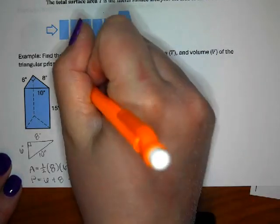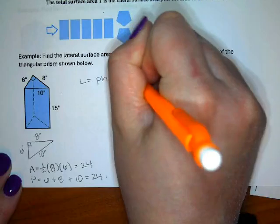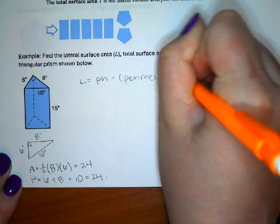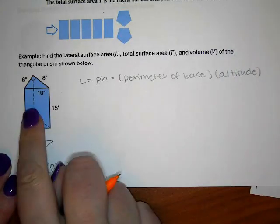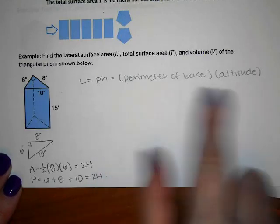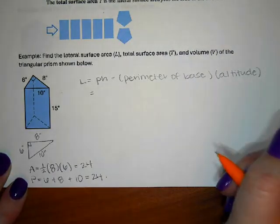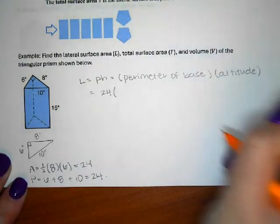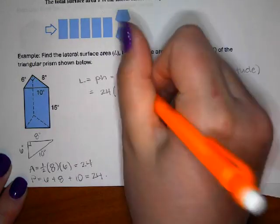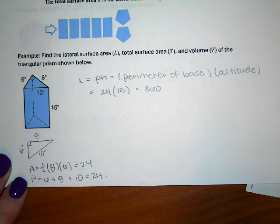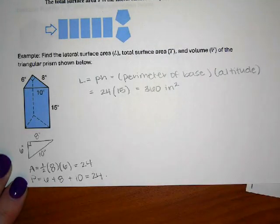The lateral surface area is p times h — perimeter of the base times the altitude of the prism. The perimeter is 24 and the height of the prism is 15 inches, so 24 times 15 equals 360. Since this is an area, the units are inches squared.